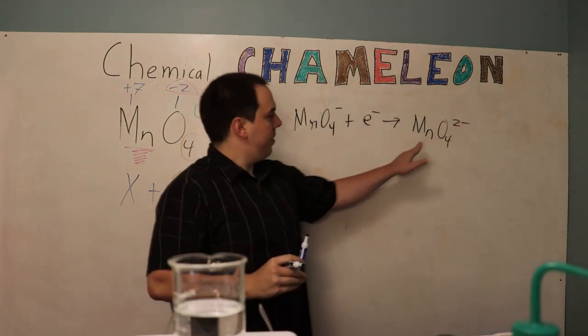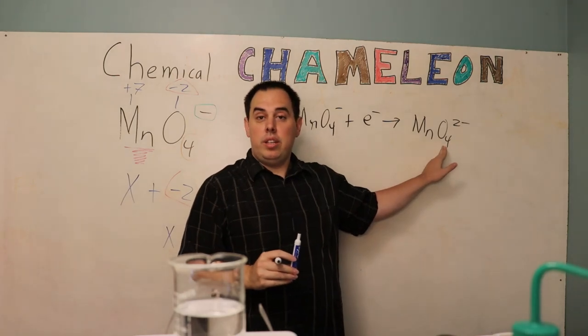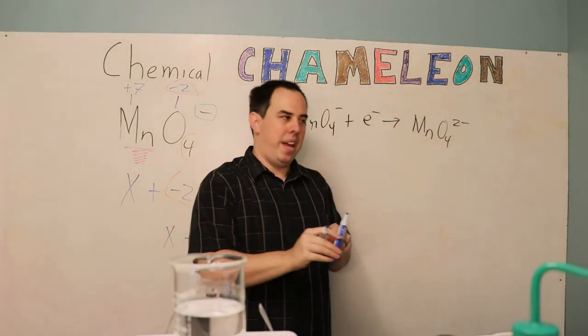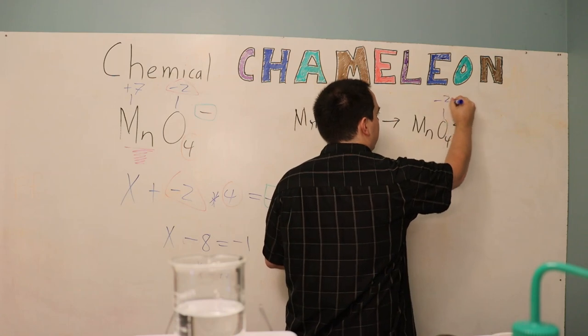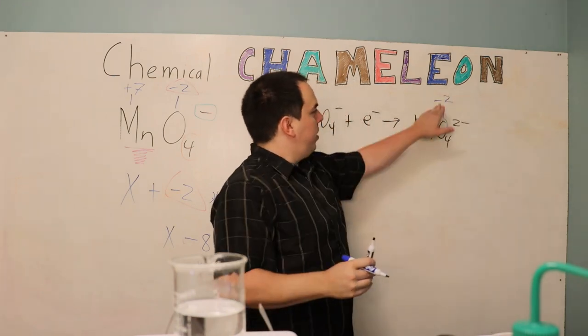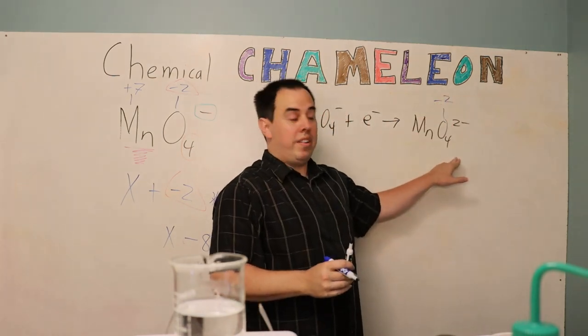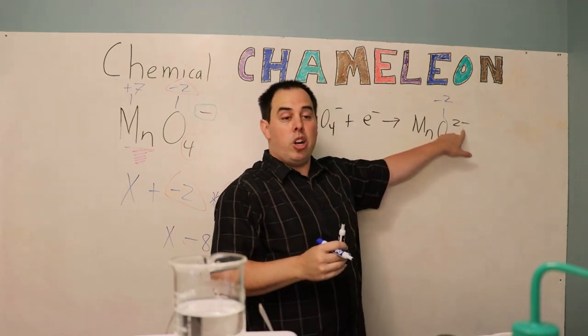Now I'm going to look at the oxidation state of this. We have oxygen which is a negative 2 oxidation state. And so we're going to do negative 2 times 4 give us negative 8 just like last time. Only this time our charge is 1 less.